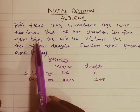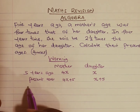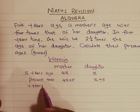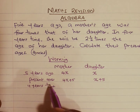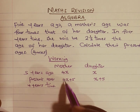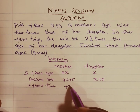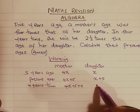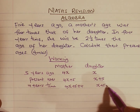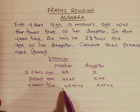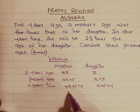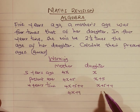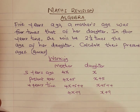In four years' time, let us get their ages. The mother will be 4X plus five, we add four, giving 4X plus nine. The daughter will also be X plus five, then we add four years, giving X plus nine.